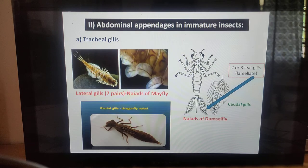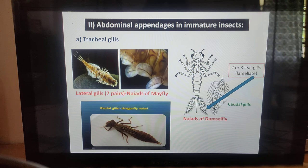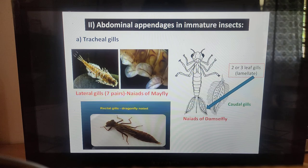Abdominal appendages in immature insects include tracheal gills. These are lateral outgrowths of the body wall richly supplied with trachea to obtain oxygen from water in naiads — the aquatic immature stages of hemimetabolous insects. Seven pairs of filamentous gills are present on the first seven abdominal segments of naiads of mayfly. These are called lateral gills.